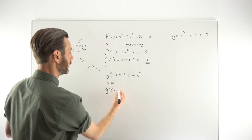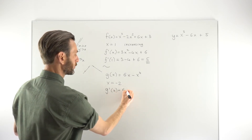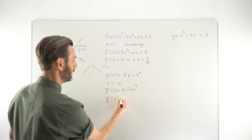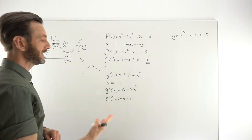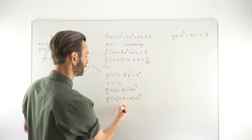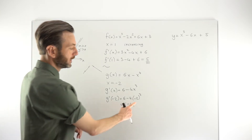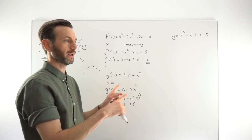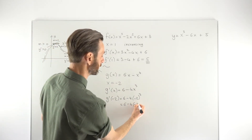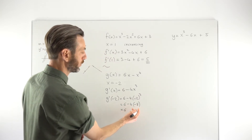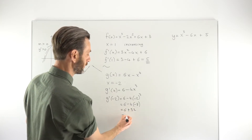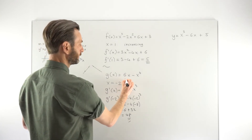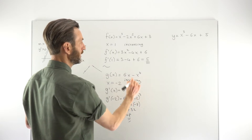Taking the derivative: g′(x) = 6 − 4x³. Substituting x = −2: g′(−2) = 6 − 4(−2)³. Now (−2)³ = −8, since odd powers of a negative stay negative. So that's 6 − 4(−8) = 6 + 32 = 38. We don't really care about that number — we just care that it's positive. So at that particular point, the function is increasing; the values are getting bigger.